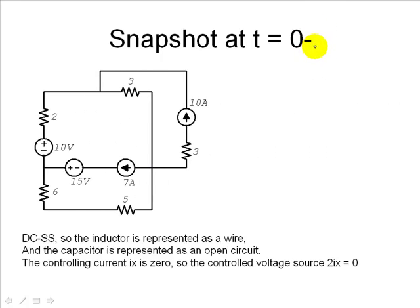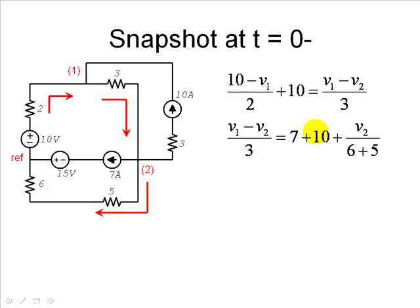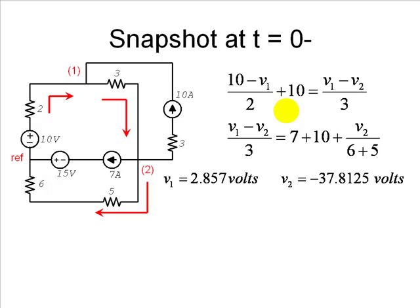Let's move that to the left-hand side so we have space to compute. We identify the reference node, node one, and node two. No controlling equations, no evil branches — two KCL equations. Those are the KCL equations — I leave those for you to pause the tape and verify. We go to the calculator and solve them. These are the voltages V1 and V2 with respect to the reference. Node one is 2.86 volts higher than the reference, and node two is 37.8 volts below the reference, which is why we have a negative sign.